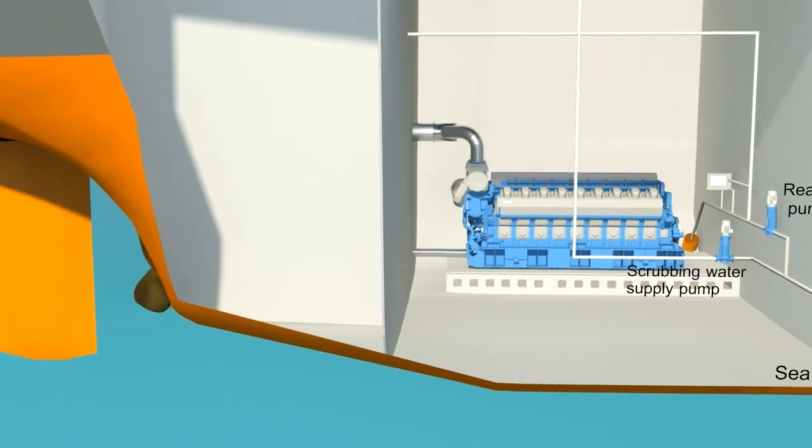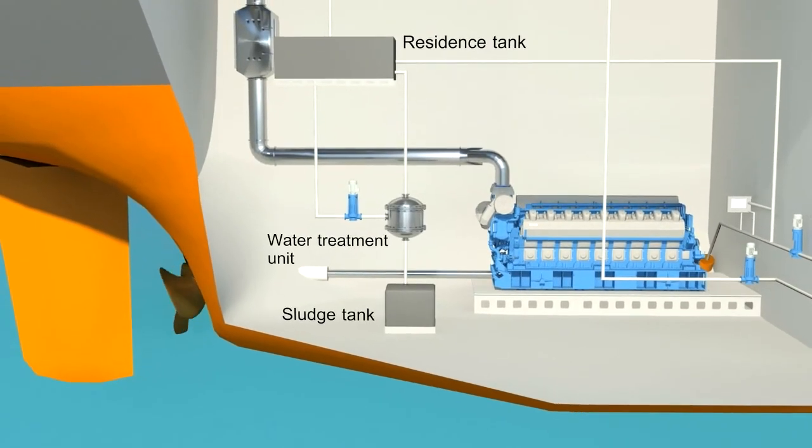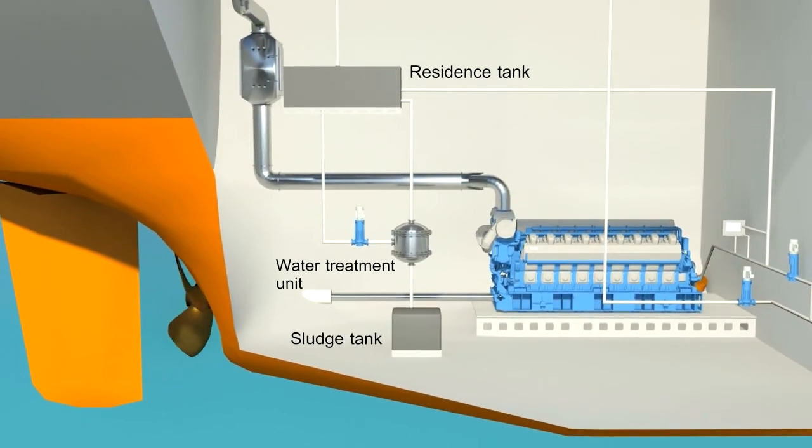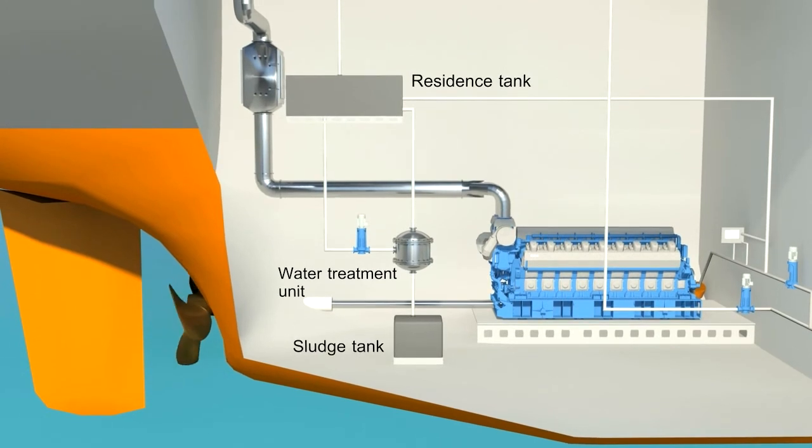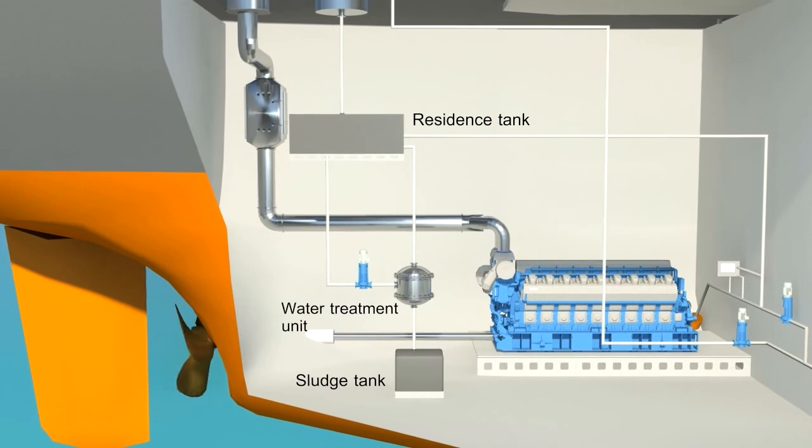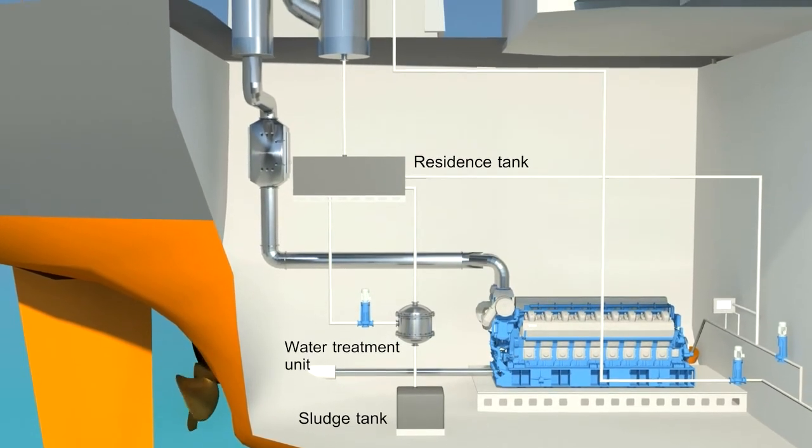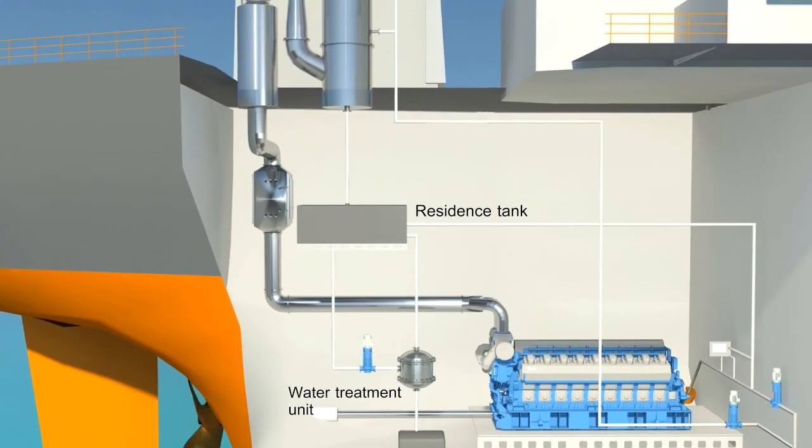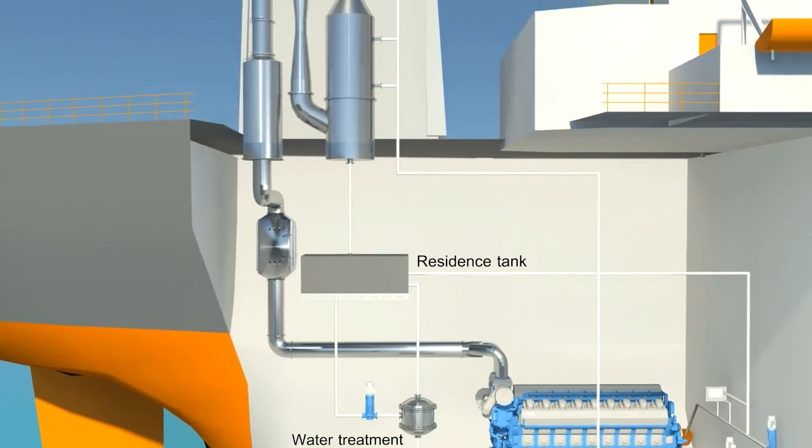A scrubber water treatment unit handles the cleaning of the scrubbing water before being discharged into the sea. The contaminants that are cleaned out of the scrubbing water will be stored in a sludge tank to be disposed of at port. A residence tank helps the scrubbing water to settle before being fed into the water treatment unit.